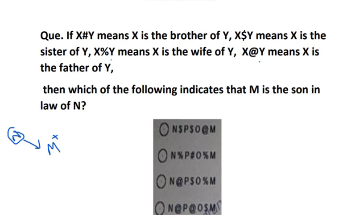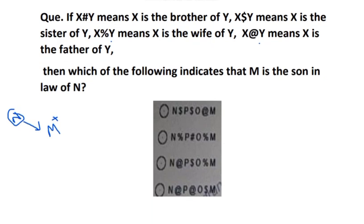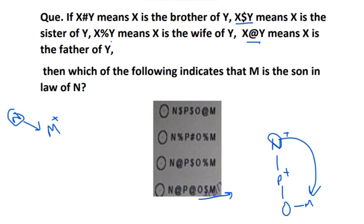For these types of questions, I recommend starting from the last option - you will get good results. You can see: N at-the-rate P means N is the father of P. After that, P at-the-rate O means P is the father of O. Now O dollar M means O is the sister of M. We have to check N and M - we need only one generation gap but there they have three generation gaps, so this cannot be the answer.